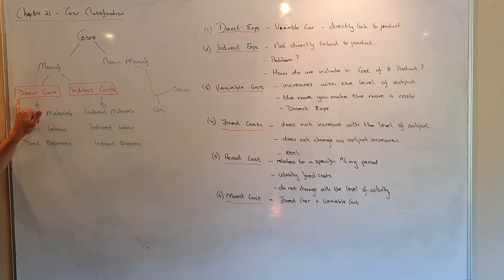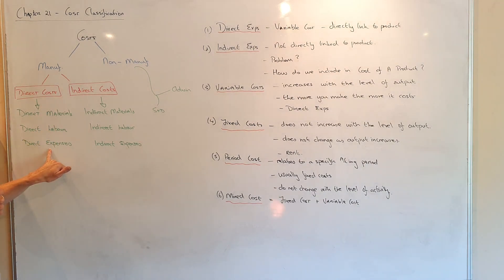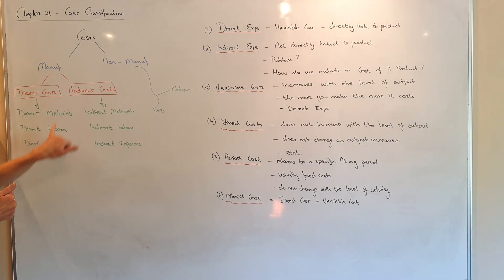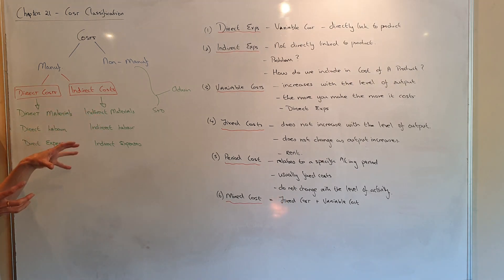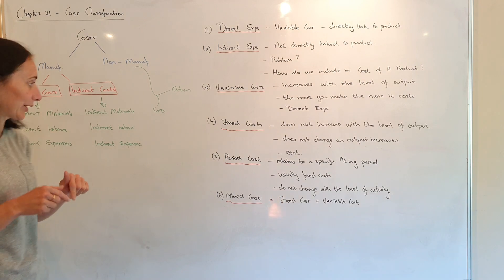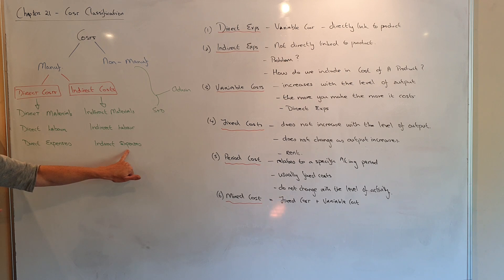Your direct costs, if you turn it back to your manufacturing, you have direct materials, direct labour, direct expenses — and that would be your paid royalties, or it could be hiring special equipment. Indirect costs is everything else linked to making the product which you can't directly link specifically to the product — so indirect materials, indirect labour, indirect expenses.